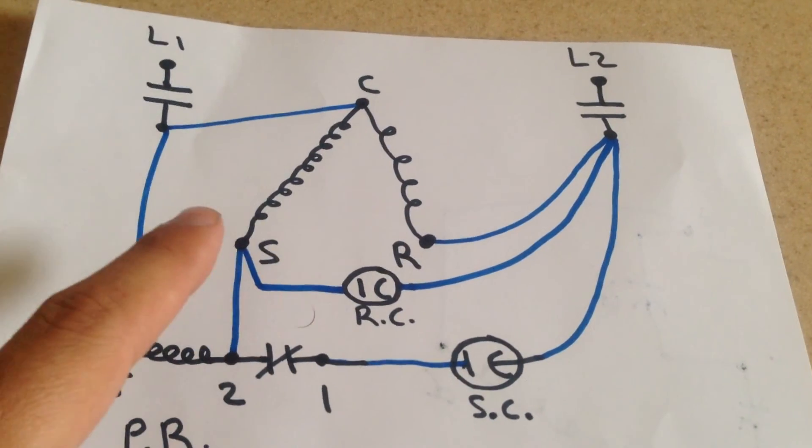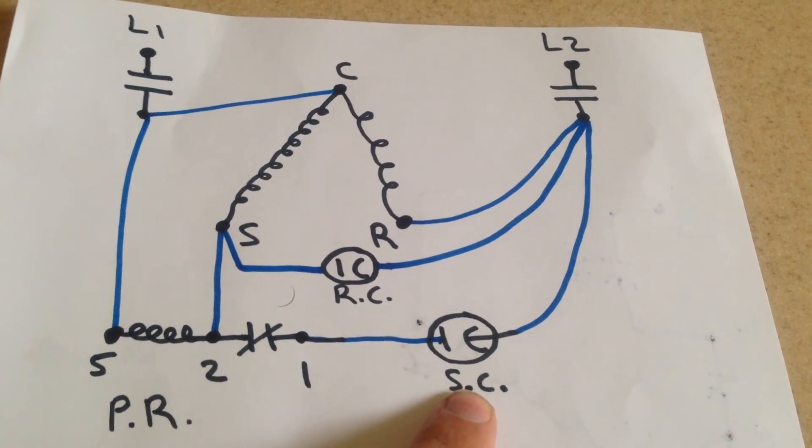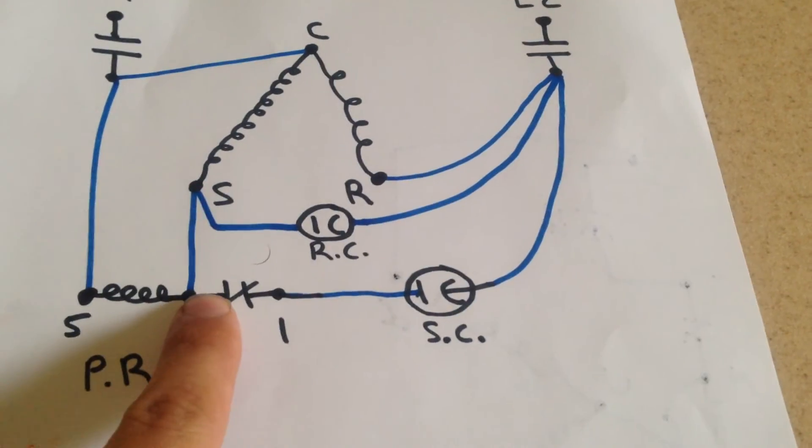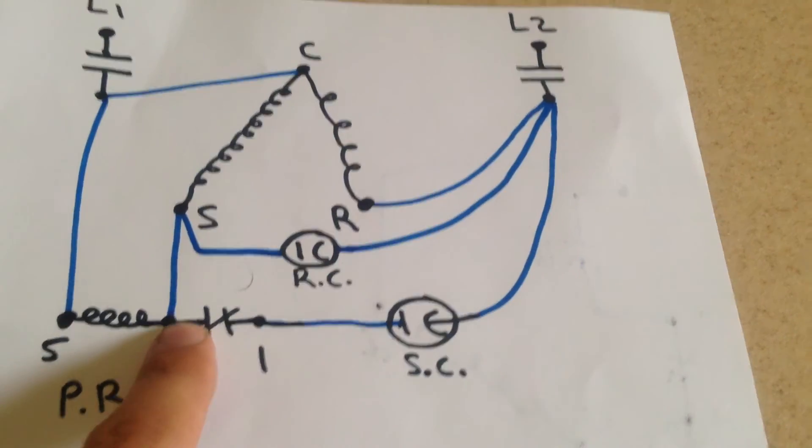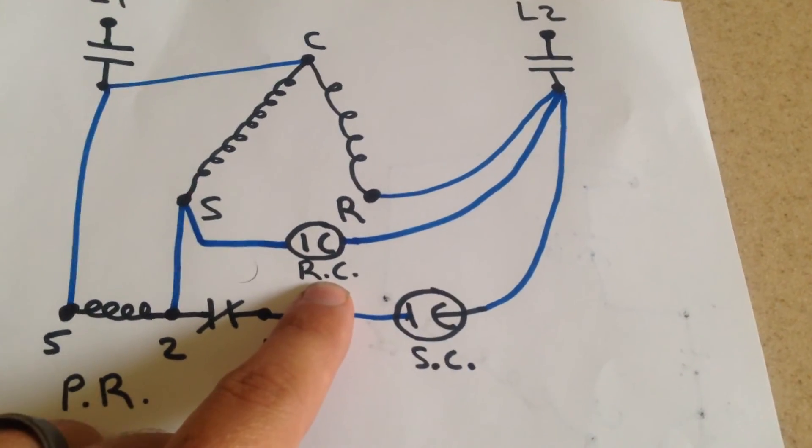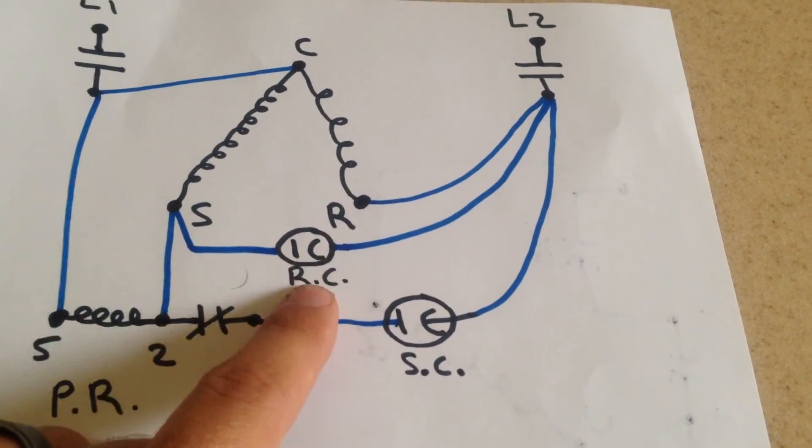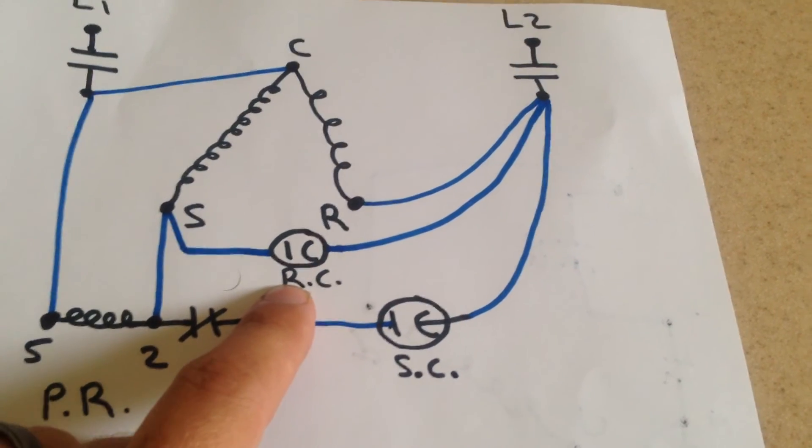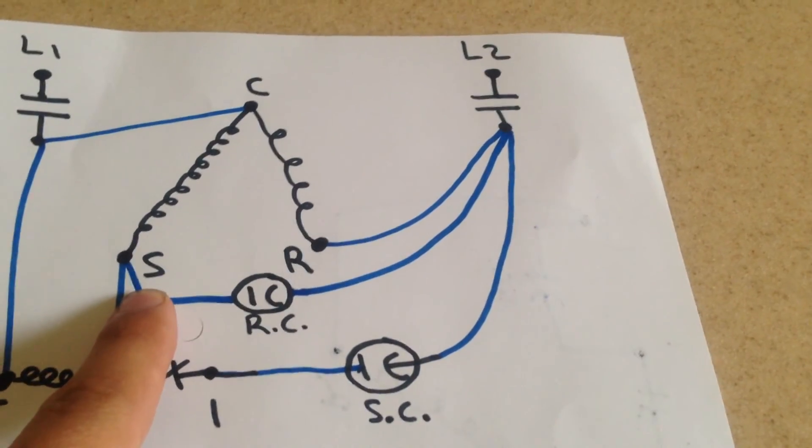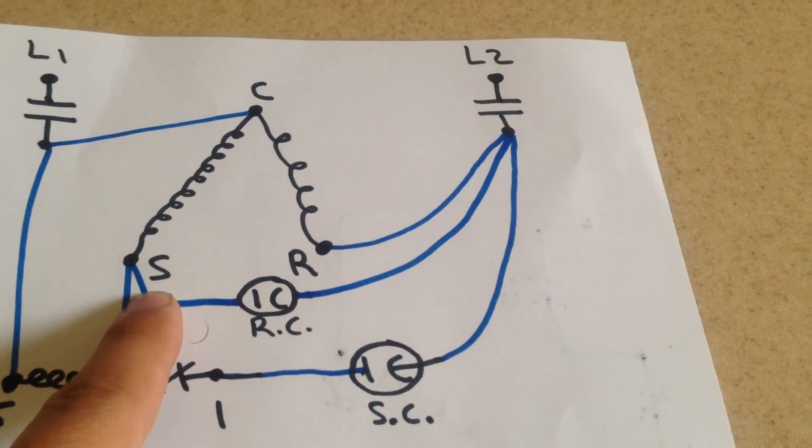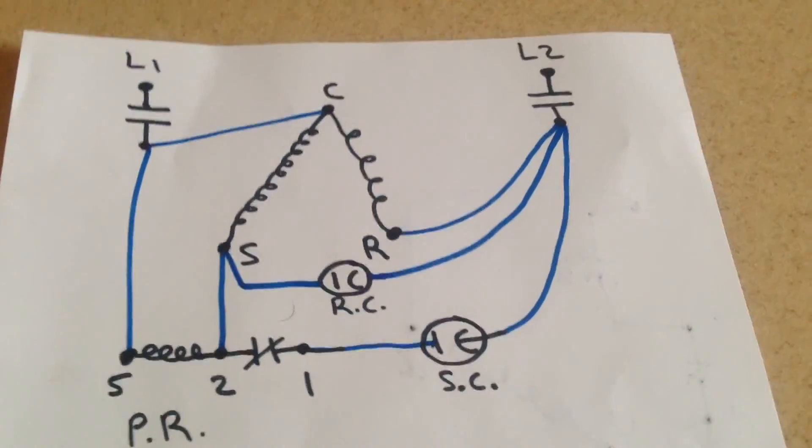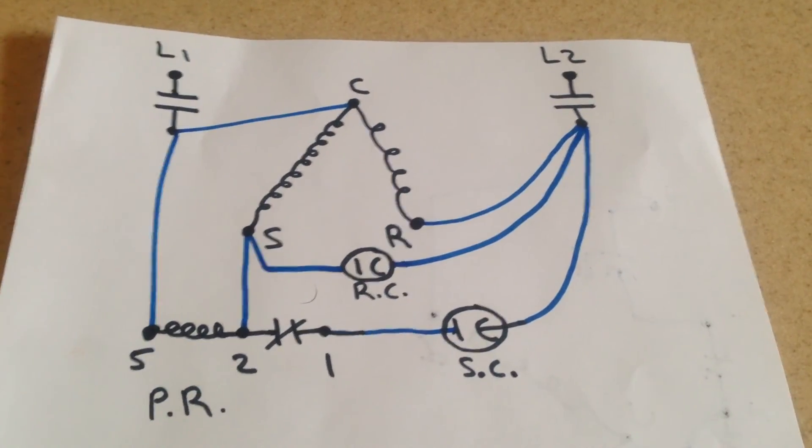And once the motor is up to speed, it's going to drop the start capacitor out of the circuit by opening this contact here. And then all we'll be left with in this application is our run capacitor continuing to assist the efficiency of our compressor in operation. So hopefully this helps you guys out and thank you for watching.